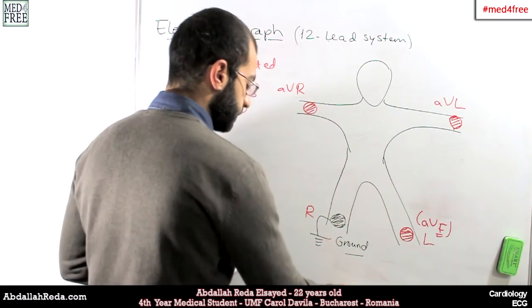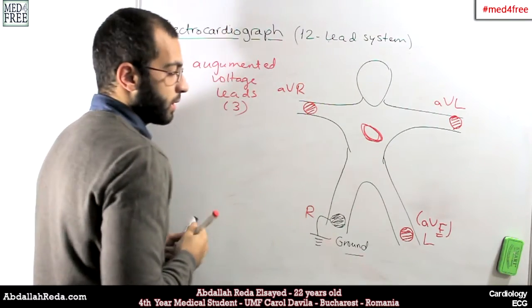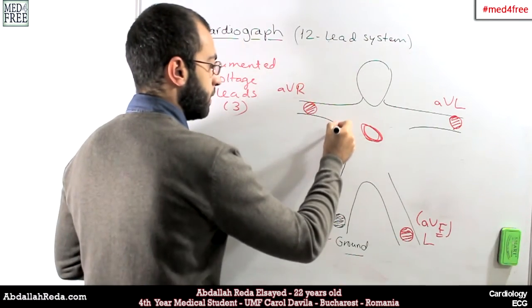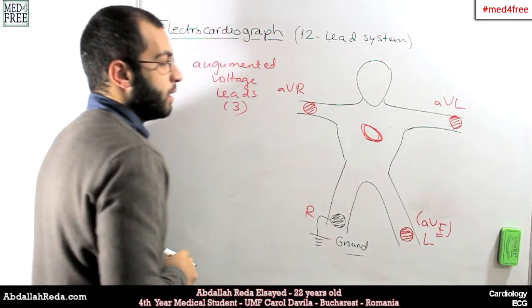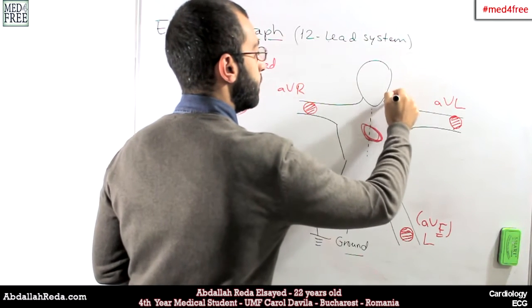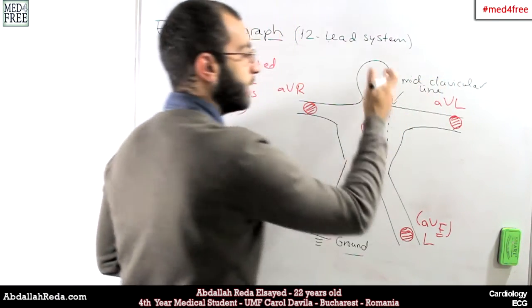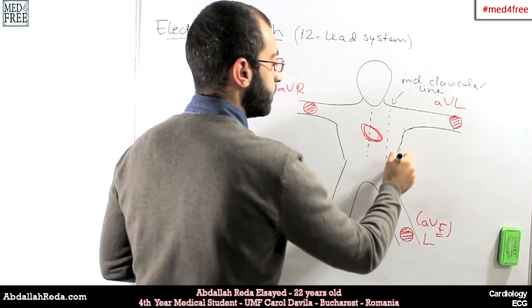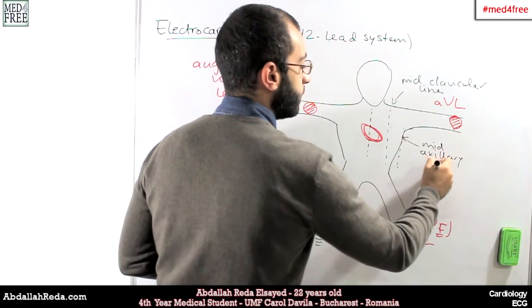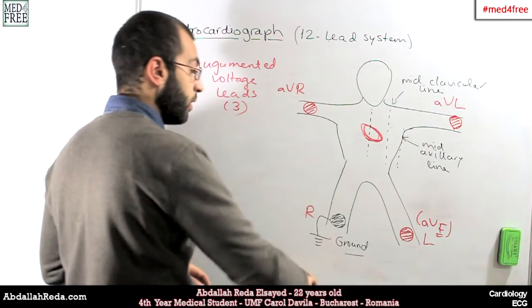And then, the heart is situated right here. We'll make this a bit wider. Here would be the sternal line, and here would be the mid-clavicular line. So the line that passes through the middle of the clavicle. And then here we have the mid-axillary line. The line that passes through the middle of the axilla. Those three lines would help us know how to put the next six leads.